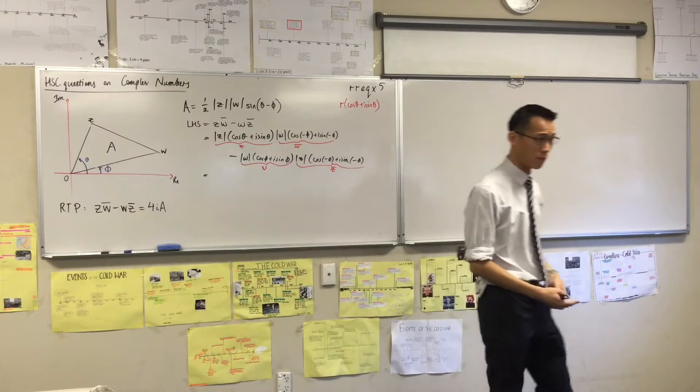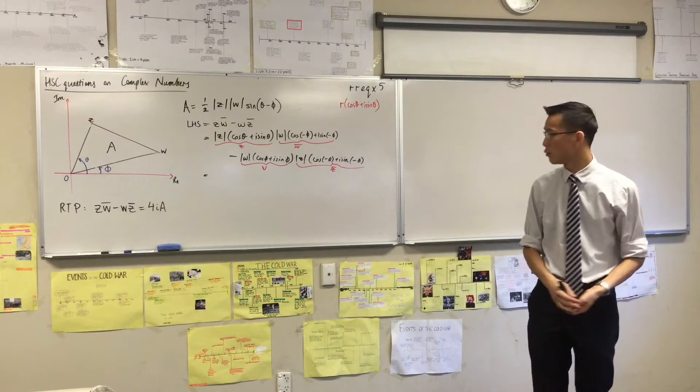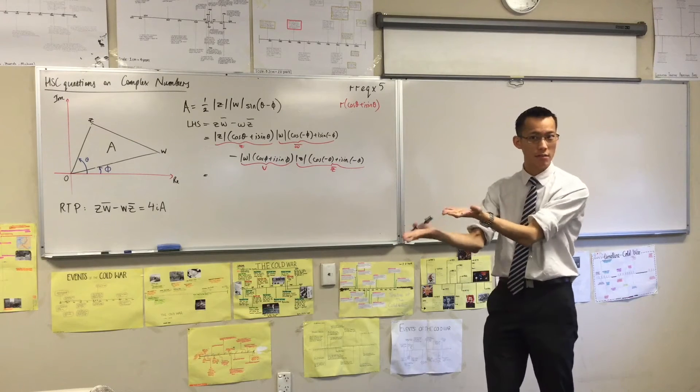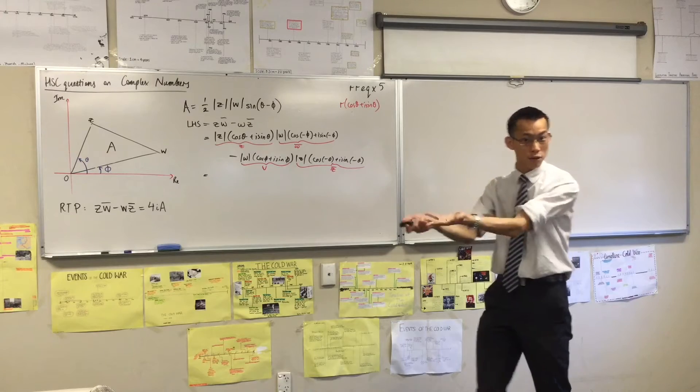Now when you multiply numbers in polar form, you do something to the moduli and you do something to the arguments. What do you do to the moduli? You multiply. You multiply the mods.